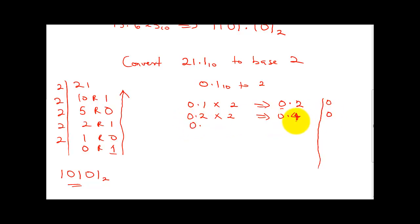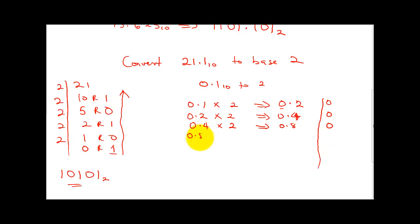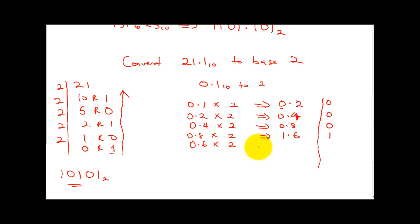Bring 0.4 — remember the target is to get this side to become 0. 0.4 multiplied by 2 gives me 0.8, so I have 0 here. Then 0.8 multiplied by 2 gives me 1.6, so my number here is going to be 1. I'll take the 0.6 and multiply by 2.